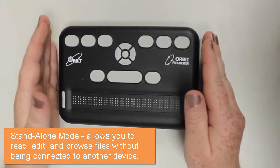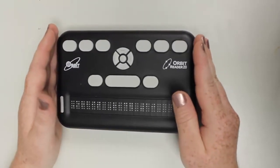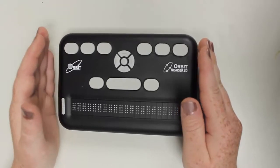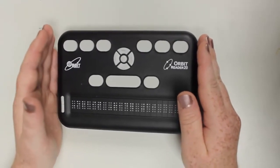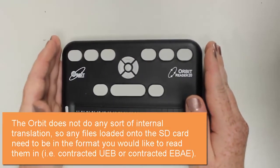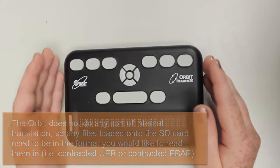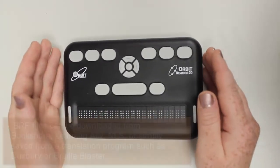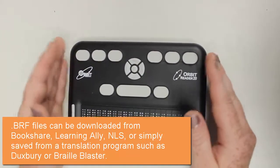Standalone mode is the mode that you can read BRF files that are downloaded from various sources like Bookshare, National Library Service, or anything that you create in Duxbury and is saved as a BRF file. You can get BRF files from Bookshare, Learning Ally, all of those things.